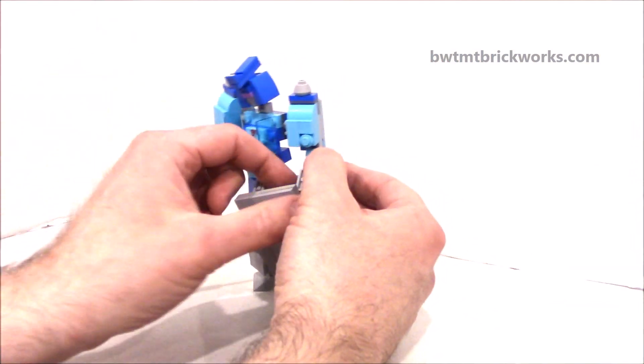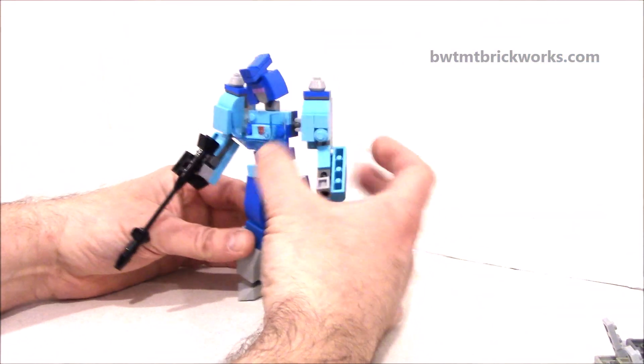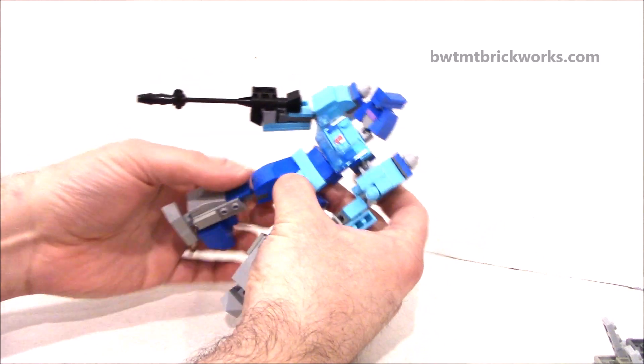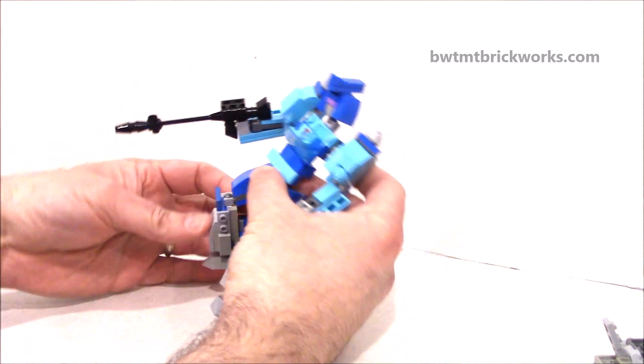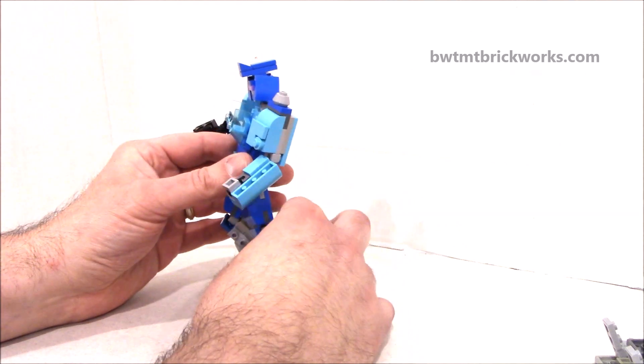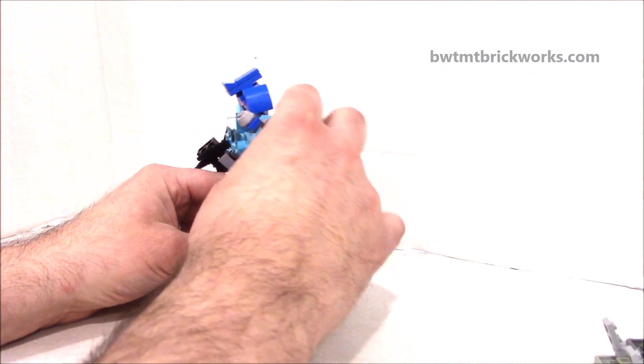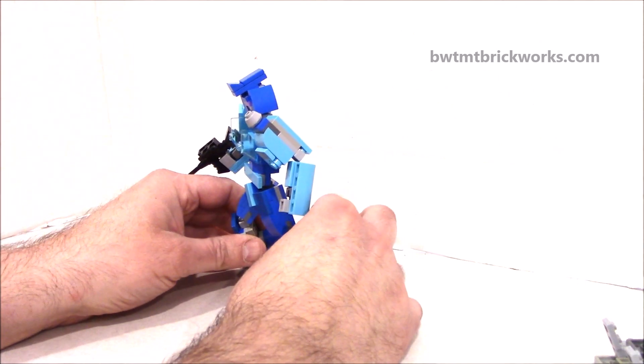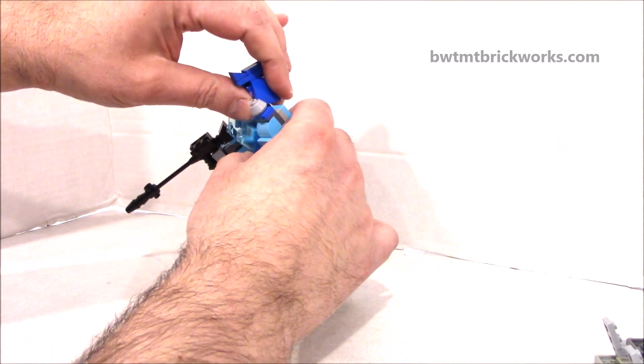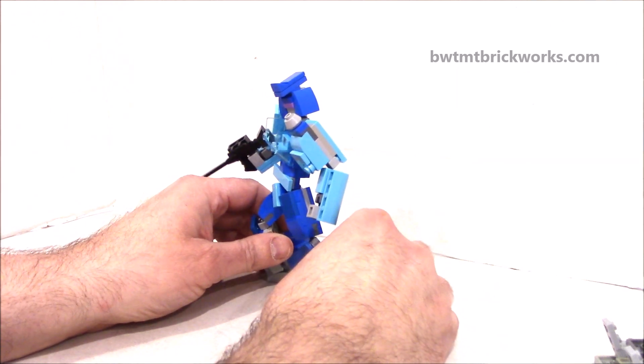You don't need to use the shield if you don't want to. Get it out of the way. As I said, you have super posability, so you can make him run, jump, whatever you want, which is pretty cool. Swivels at the waist, the head, and everything else.